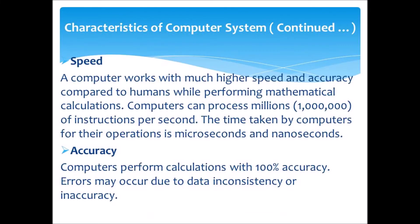First, speed. A computer works with much higher speed and accuracy compared to humans while performing mathematical calculations. Computers can process millions of instructions per second. The time taken by computers for their operations is microseconds and nanoseconds.